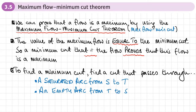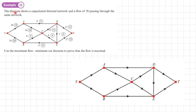The diagram shows a capacitated directed network with a flow of 38. We need to use the maximum flow minimum cut theorem to prove this flow is maximal. The first step is to identify arcs which are saturated — where the capacity equals the flow. All of the arcs shown here are saturated; there are no arcs with zero flow.